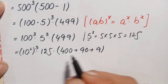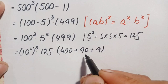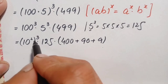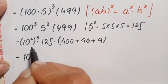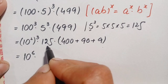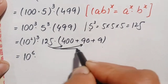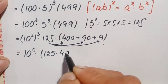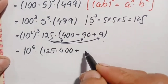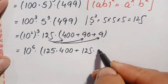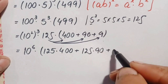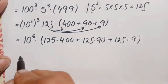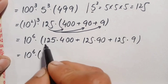We split 499 into 400 plus 90 plus 9 because the multiplication of 125 with each of these numbers is very easy and requires no rough work or standard multiplication. Using the exponential identity, we multiply the powers: 10 to the power 2 times 3 equals 10 to the power 6. We then multiply 125 by 400, then by 90, and then by 9.